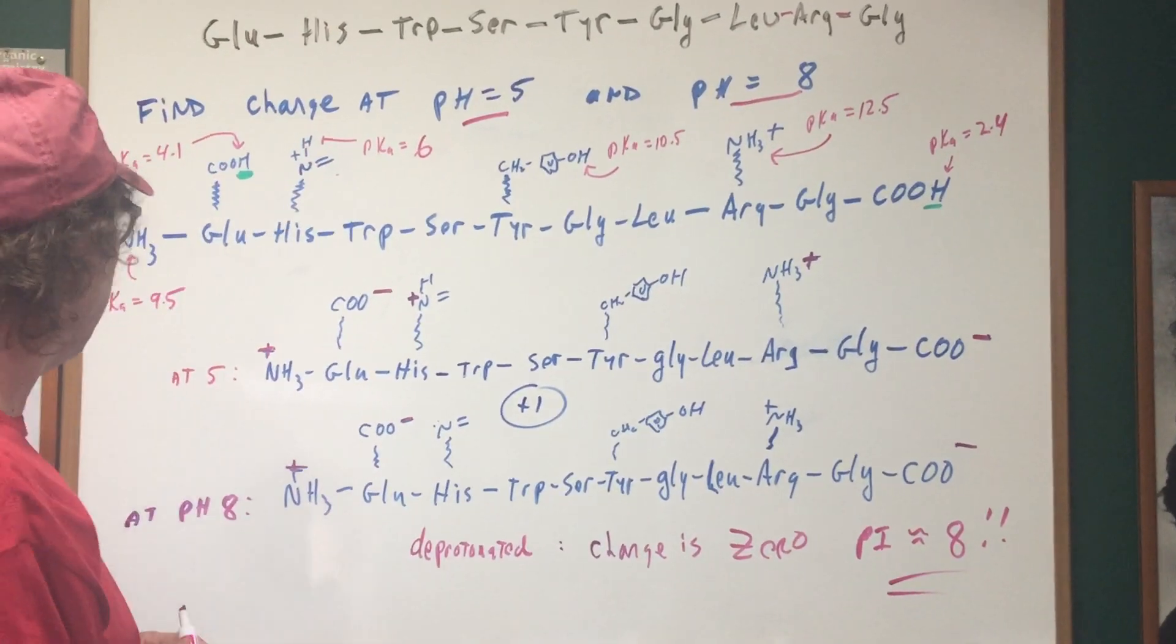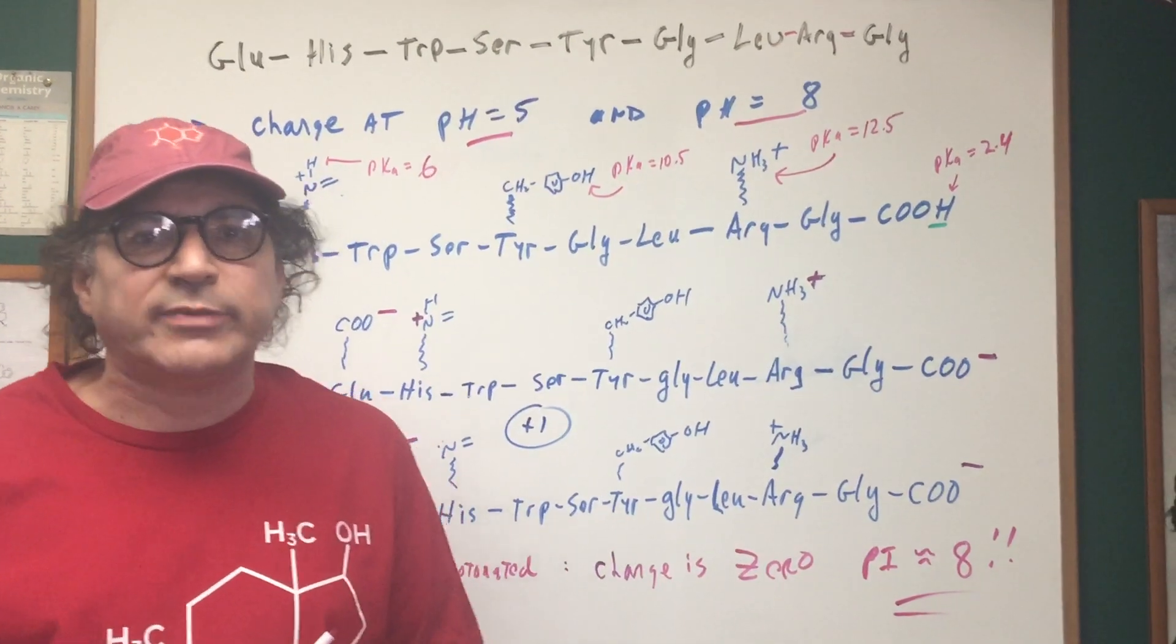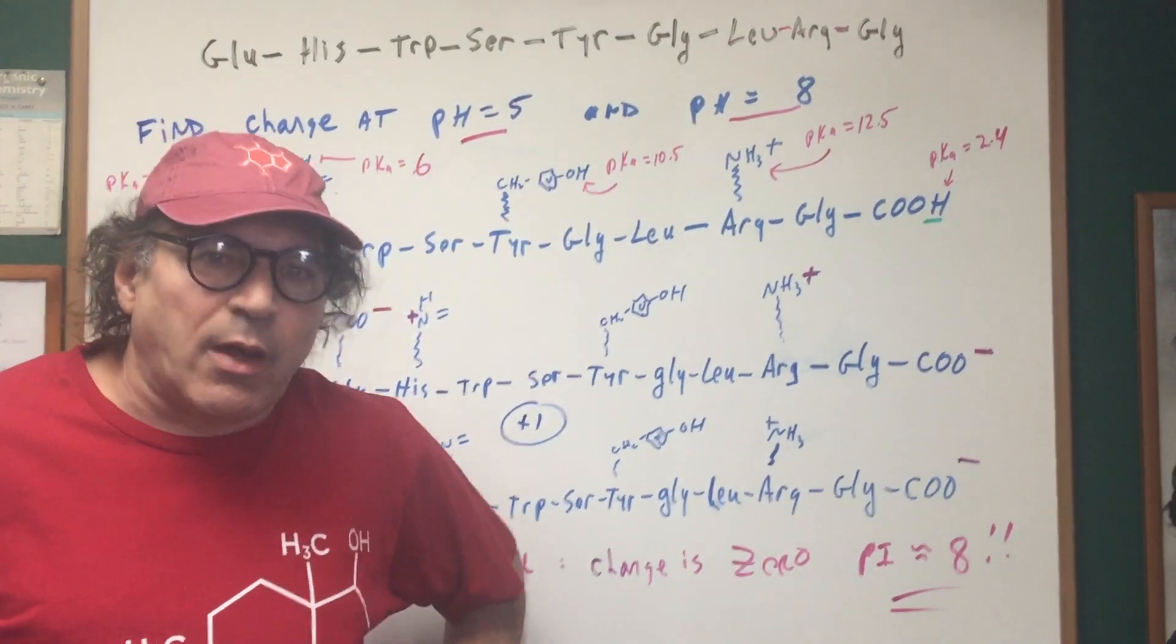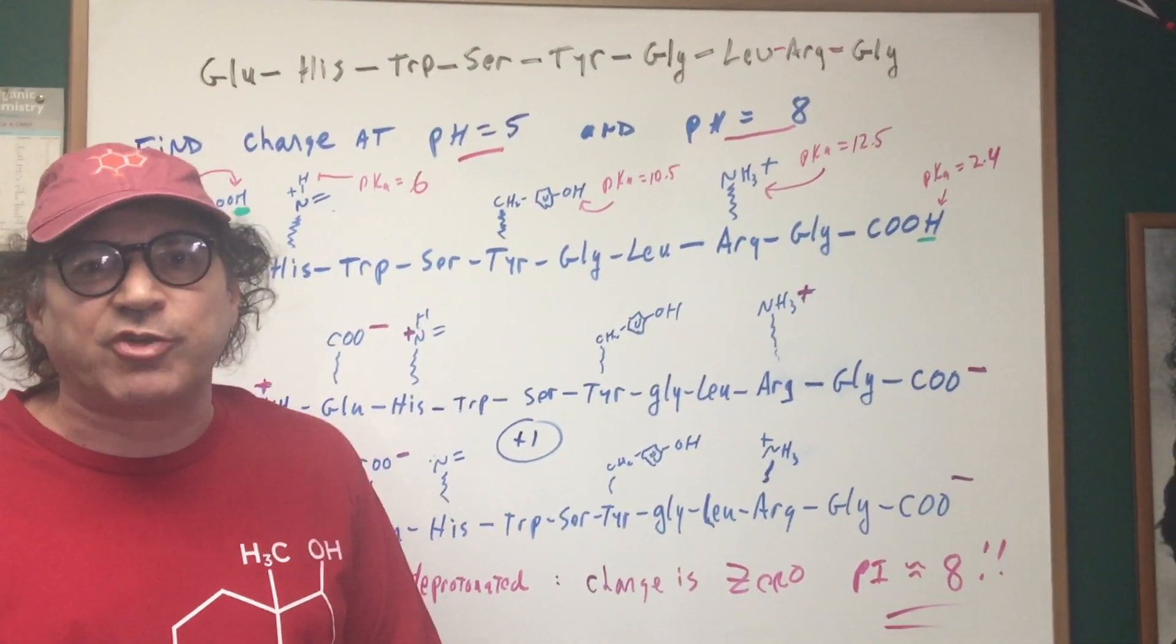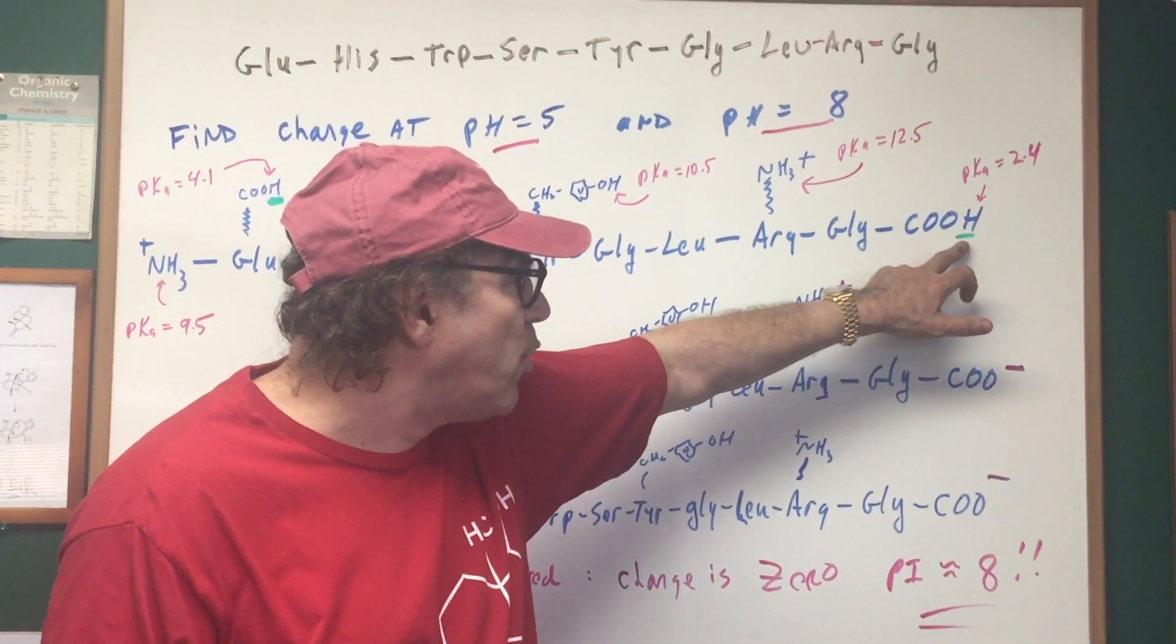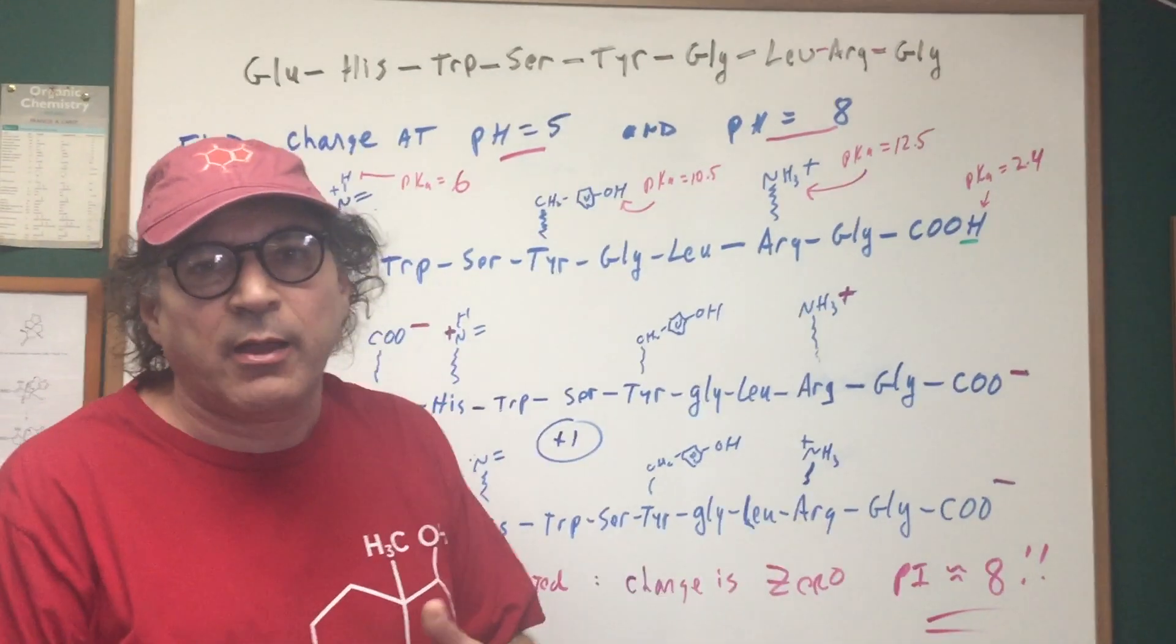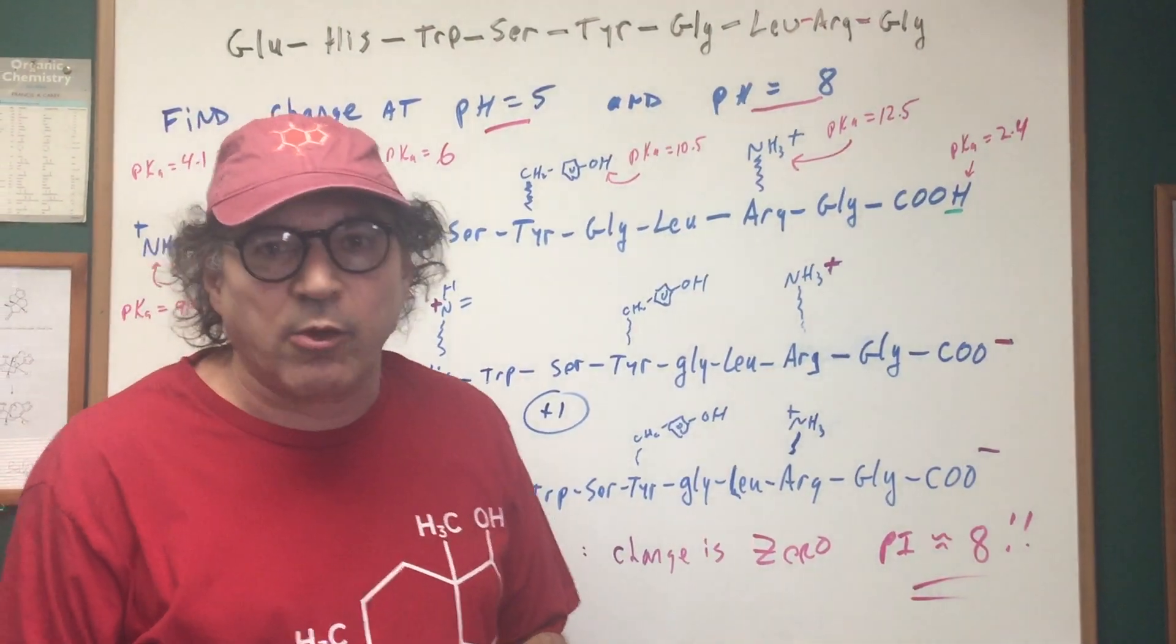Now, the first thing we want to do is to make sure you understand when you're at a PKA value, what that means. PKA, say for instance, of 2.4. That means that when the pH reaches 2.4, 50% of those H's are gone. So that means half of them is in the form of COOH and half of them will be COO minus. So anything beyond this number will be more in the direction of the anion, COO minus.